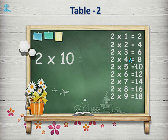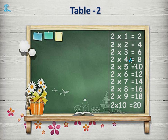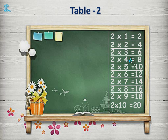2 10s are 20. So let's repeat the Table 2 once again. 2 1s are 2. 2 2s are 4. 2 3s are 6. 2 4s are 8. 2 5s are 10. 2 6s are 12. 2 7s are 14. 2 8s are 16. 2 9s are 18. 2 10s are 20.